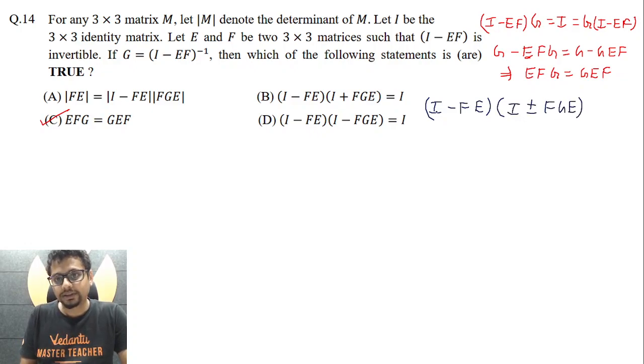So (I - FE) times (I ± FGE). What does this become? I into I is I. I plus minus FGE or rather minus FE multiply by I we may do first. Now I multiply by plus minus FGE is plus minus FGE, and minus times plus minus becomes minus plus and it becomes FE FGE.